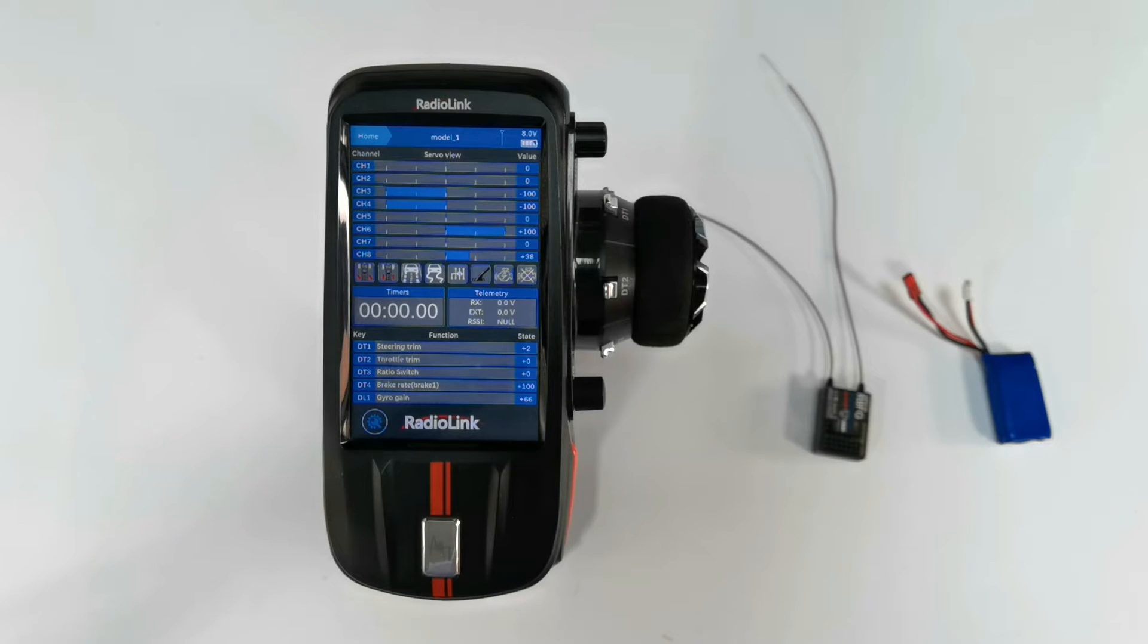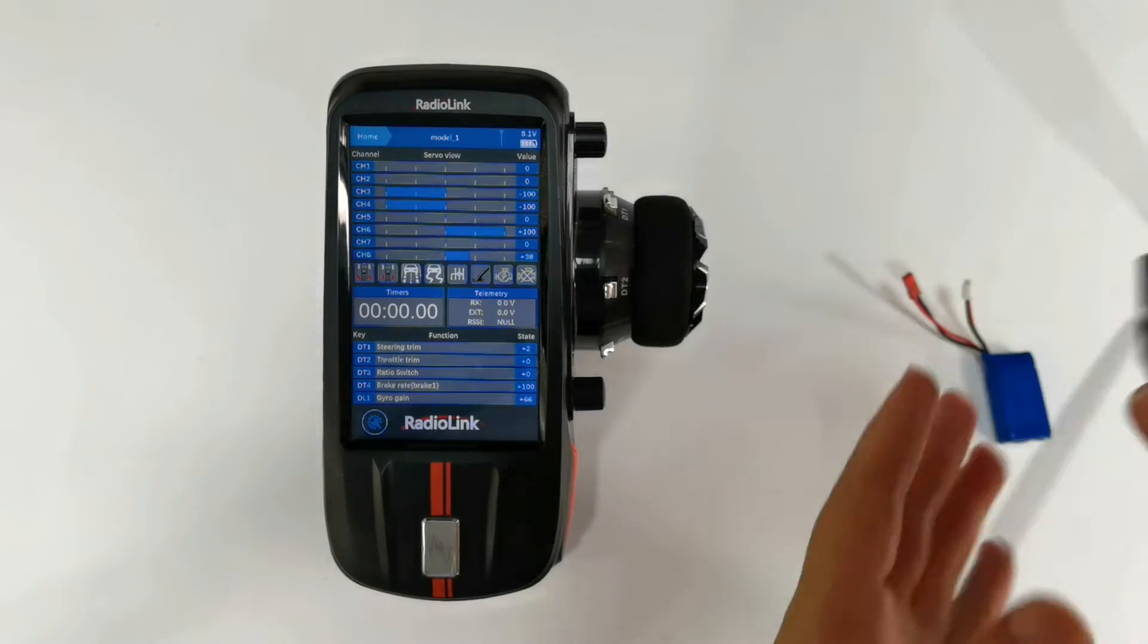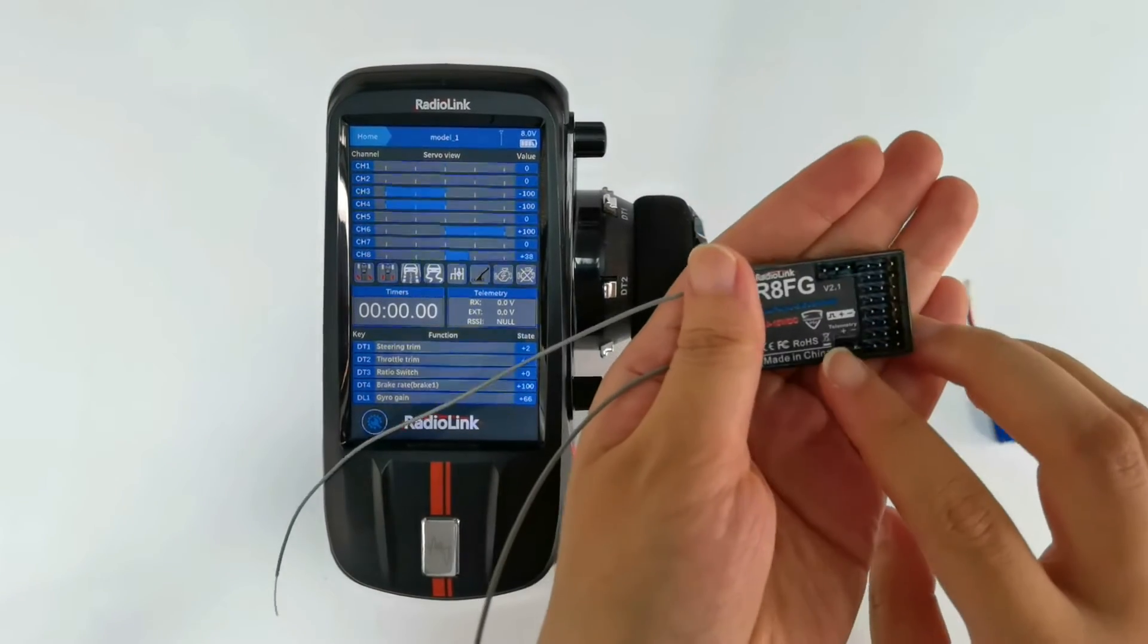Hi, today I am going to introduce the binding, working modes, and gyro function of RadioLink Receiver R8FG version 2.1.